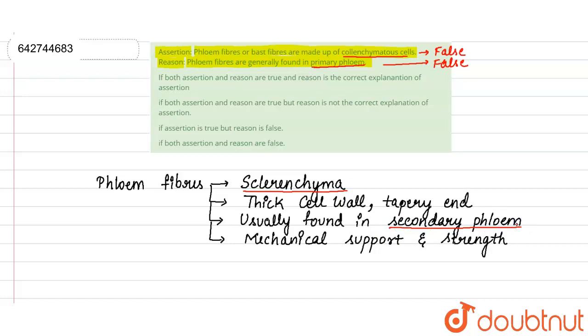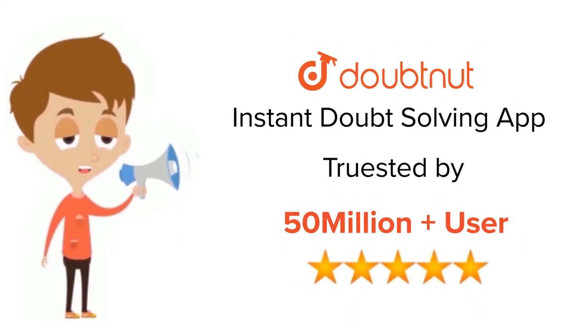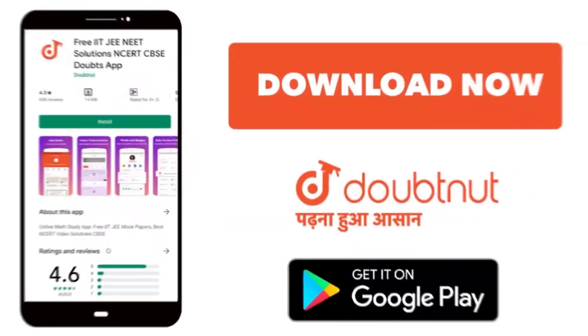So the answer for this question is both assertion and reason are false. Thank you. For class 6 to 12th, IIT-JEE and NEET level, trusted by more than 5 crore students, download Doubtnut app today.